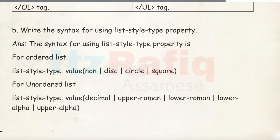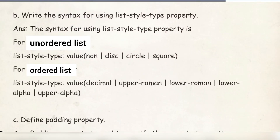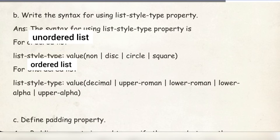Number B: Write the syntax for using the list-style-type property. The syntax is: list-style-type: value. For unordered lists, the values can be: none, disc, circle, square. For ordered lists, the values can be: decimal, upper-roman, lower-roman, lower-alpha, upper-alpha.